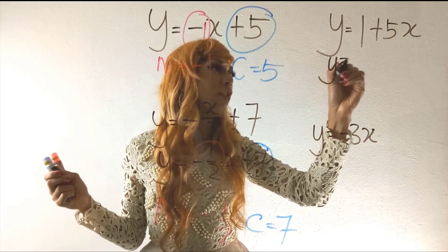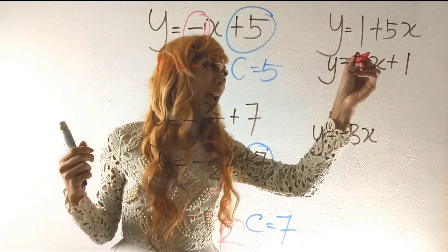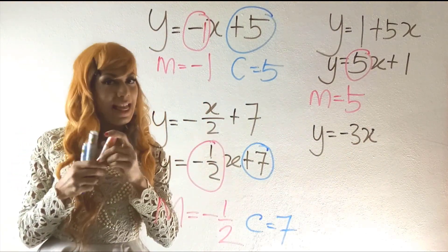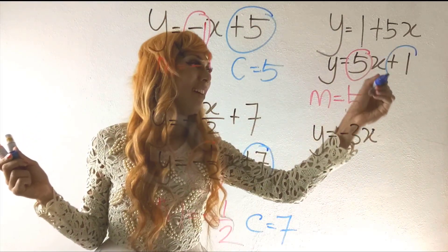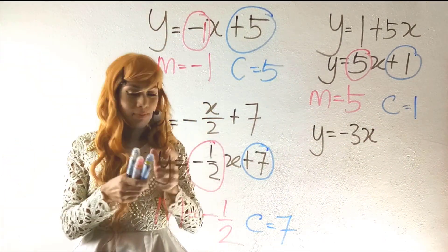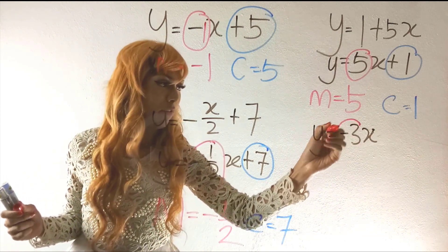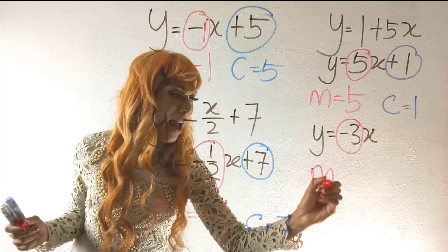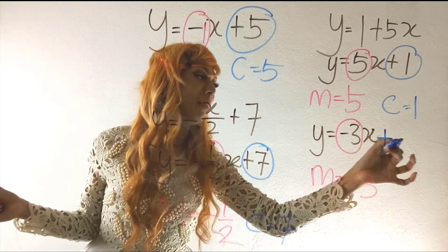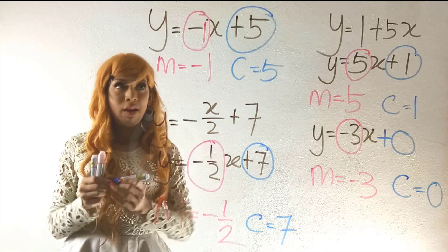For an equation like 1 − 5x + y = 0, rearrange it to y = 5x + 1, so m = 5 and c = 1. If the equation is y = −3x with no constant, then m = −3 and c = 0, since the absence of a constant term means the y-intercept is zero.